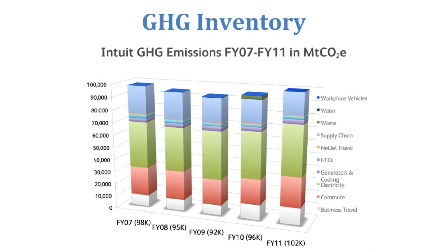What does it all add up to? The thing that you want to know is what is our total metric ton? You can see here in this example of Intuit, where they went from 98,000 to 102,000 in terms of metric tons across different fiscal years. This graphic actually helps you see where their emissions are coming from. When you look at this, most of it is coming from electricity, commuting, and their supply chain.